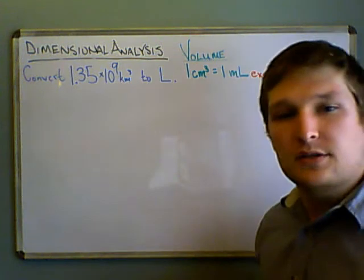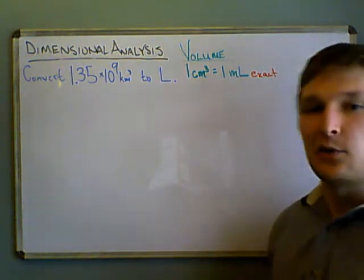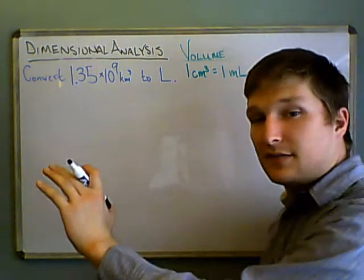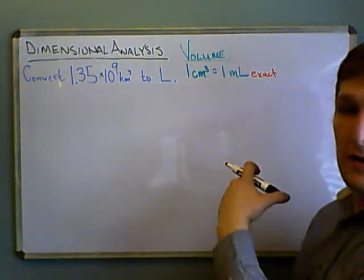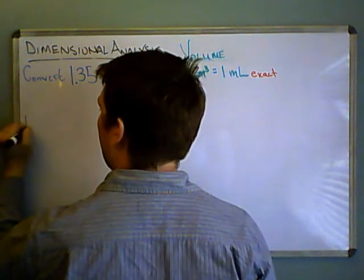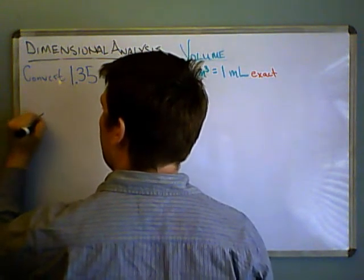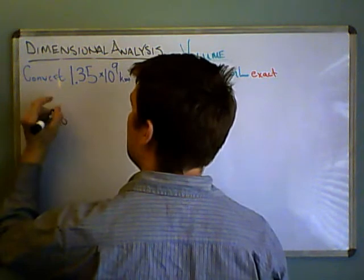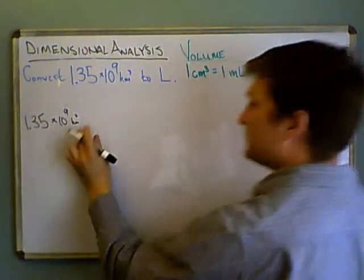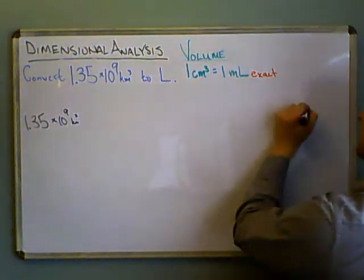So I'm just going to go into default mode. Let's say I see this and I don't know what to do. Default: we put what we know on the left side and where we want to go on the right. So let's do that. 1.35 times 10 to the 9th cubic kilometers, and we want to go to liters.